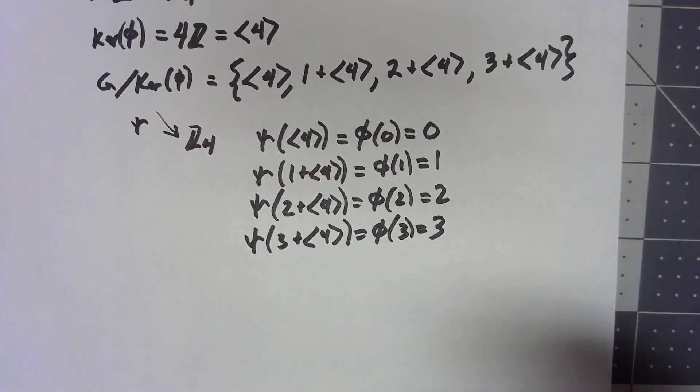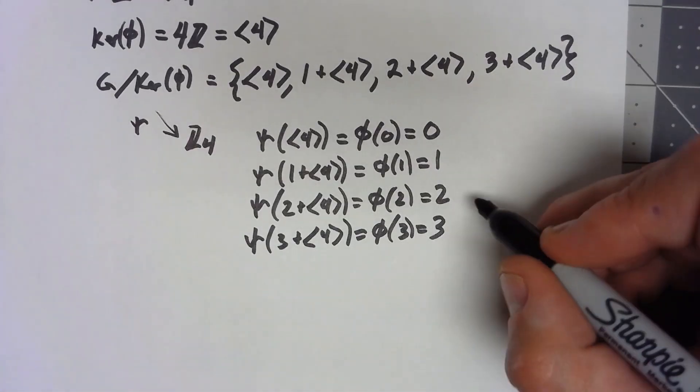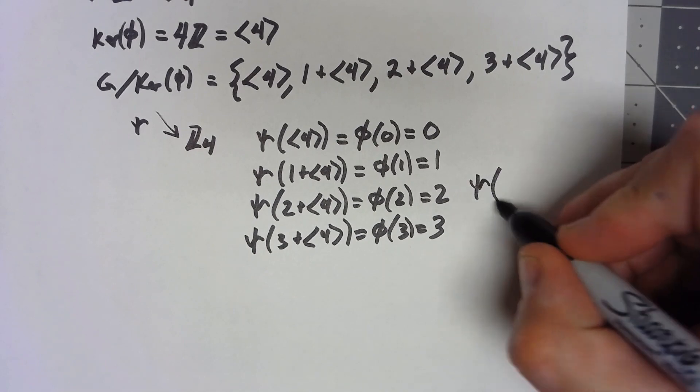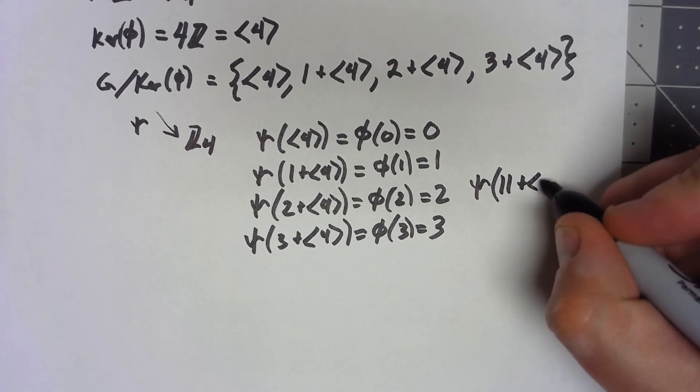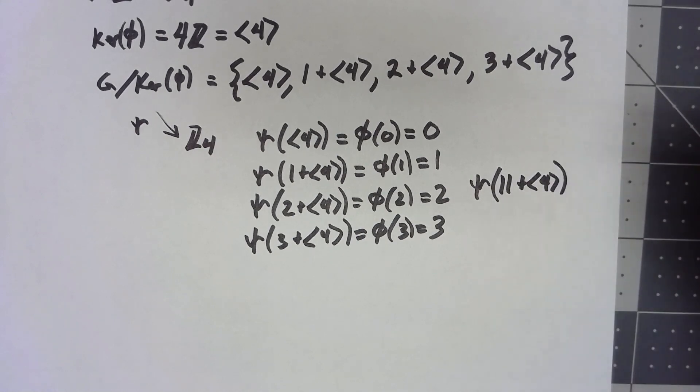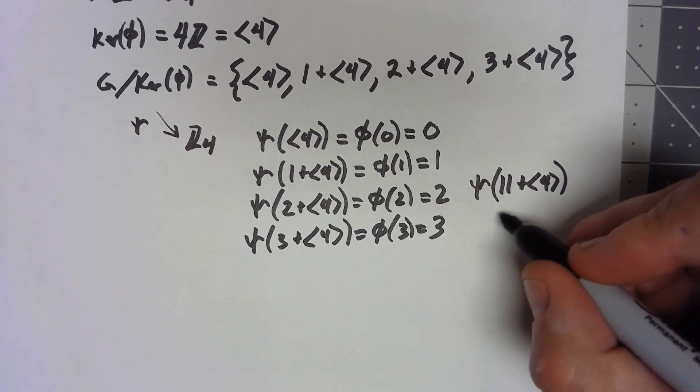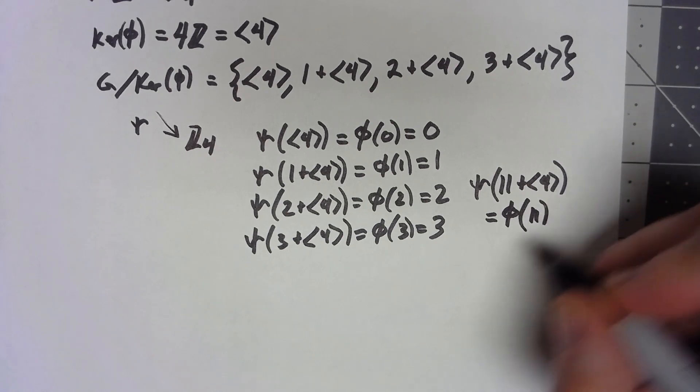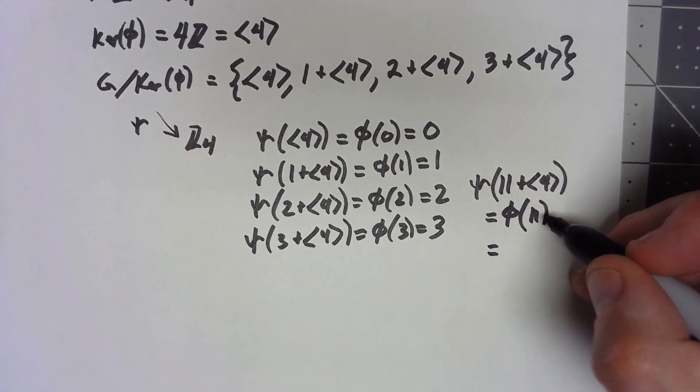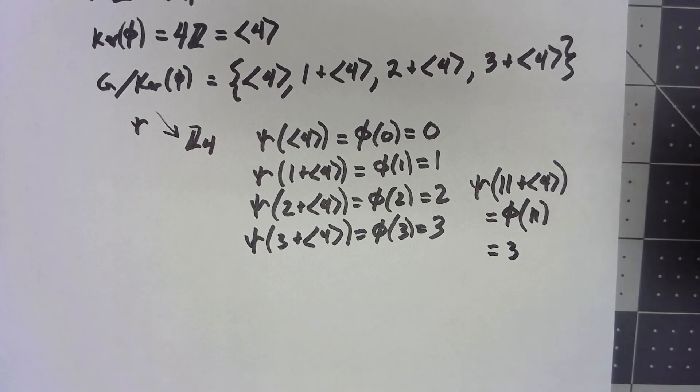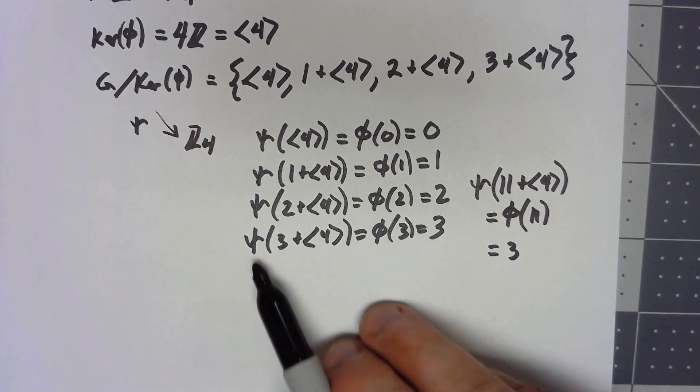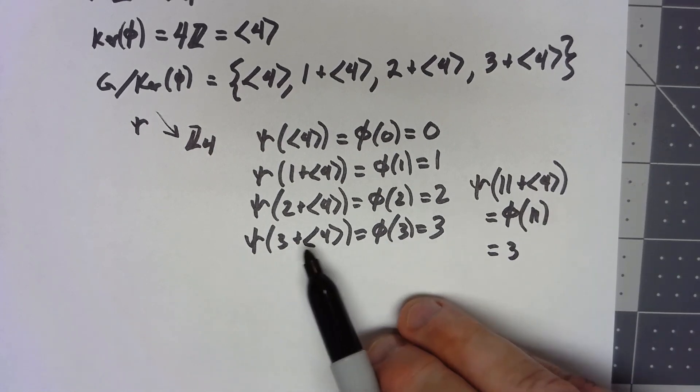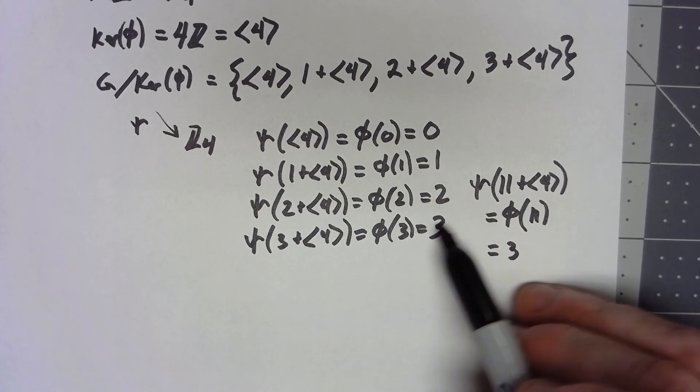Now, it's worth noting that what if I had something like chi of, say I wanted to do 11 plus 4 because that is a coset, right? So what this says is that this should be equal to phi of 11, and when I do phi of 11, that's going to be 3. Now, notice it has to be because the coset 11 plus 4 is the same thing as the coset 3 plus 4. So this is going to be a well-defined function here.